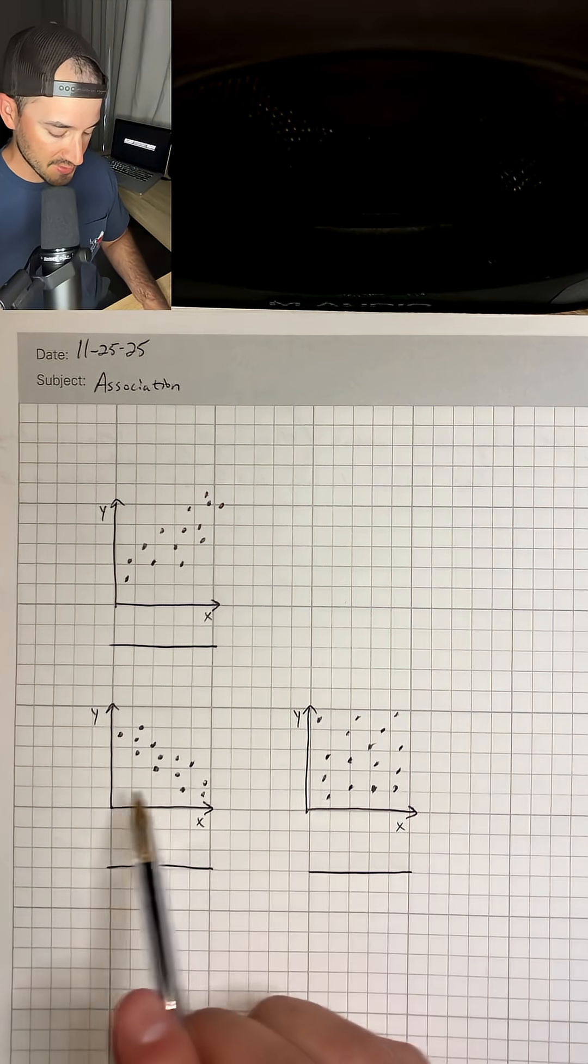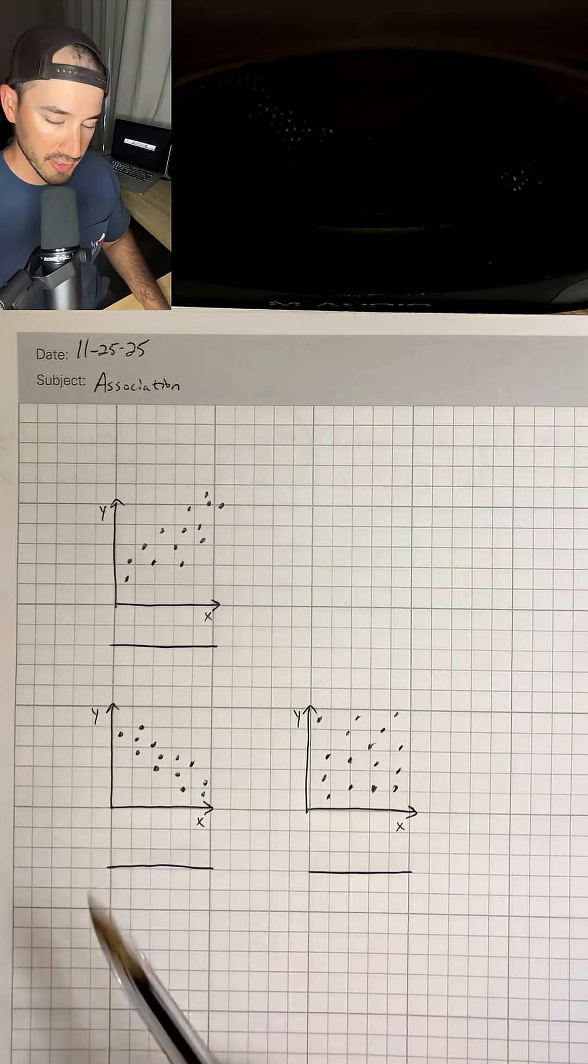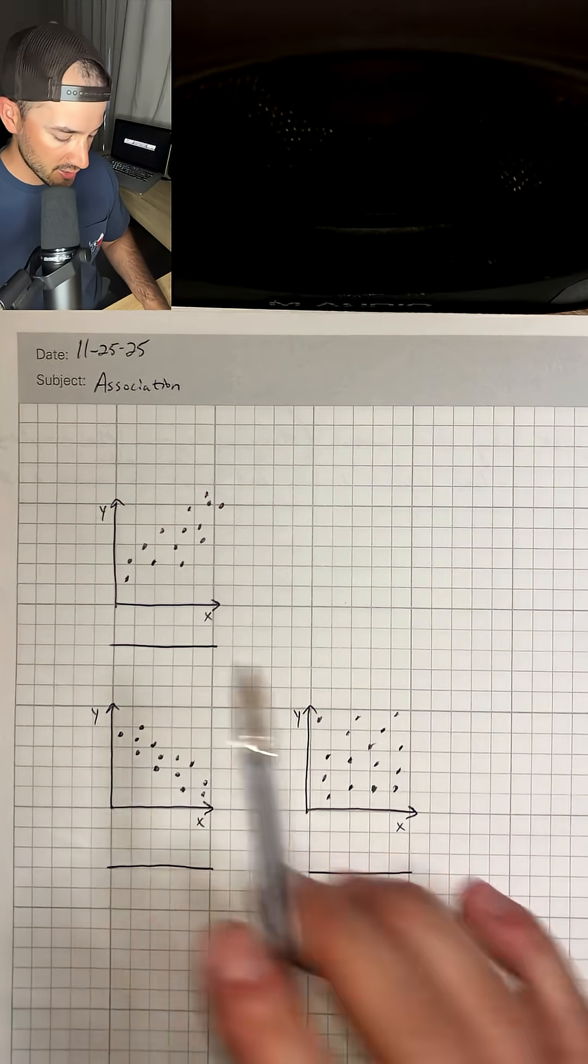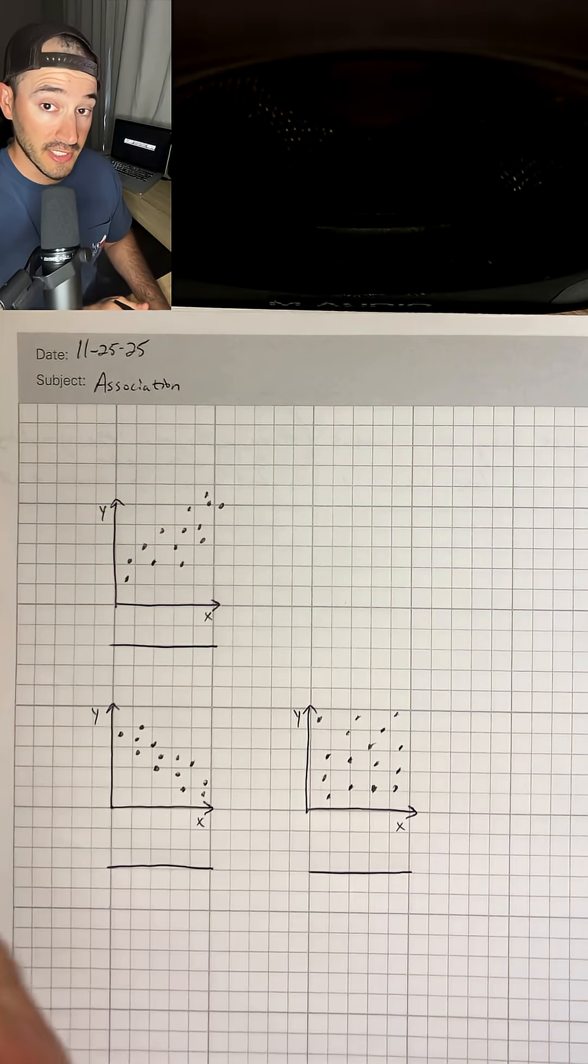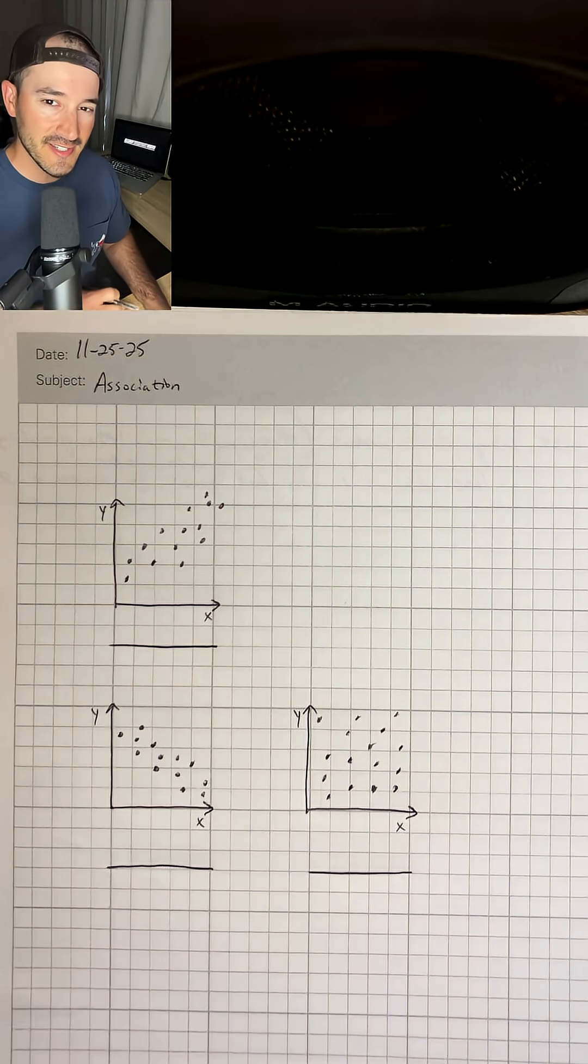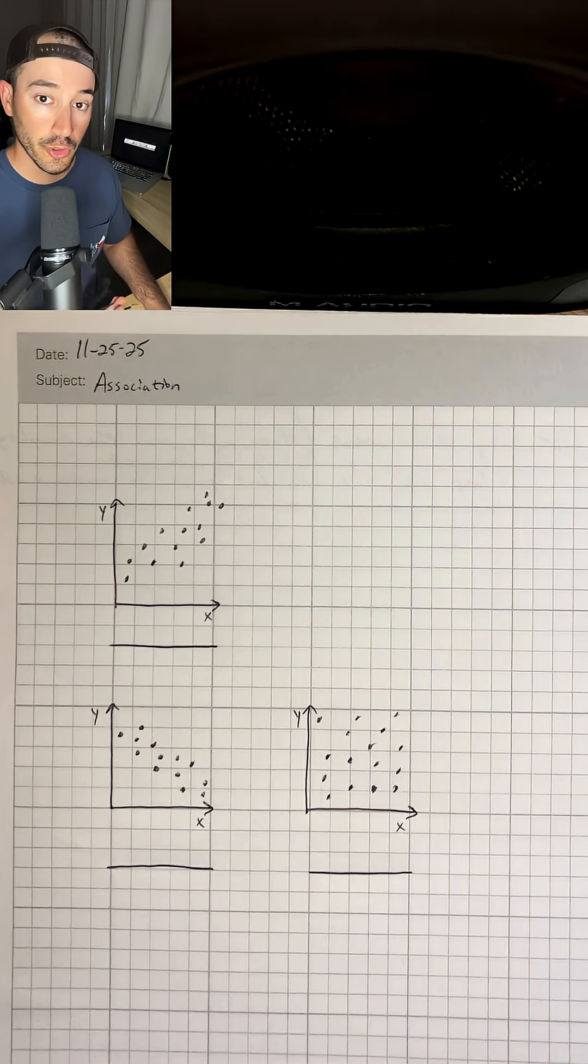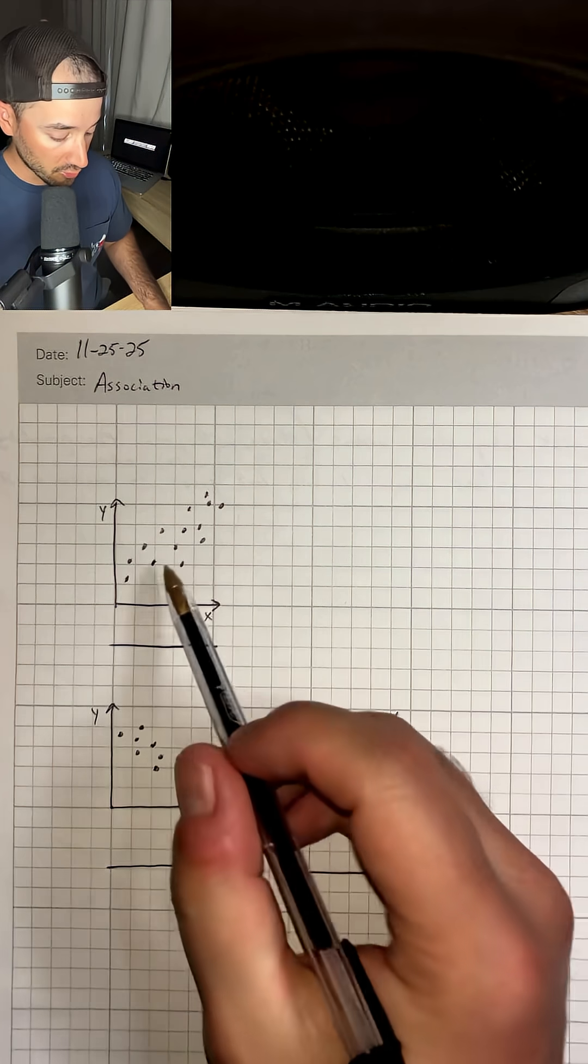So I went ahead and drew the three types of association that we're going to see in Algebra 1. And it's really simple. We're just going to look at these graphs from left to right and see if we see any kind of pattern or association with the points.